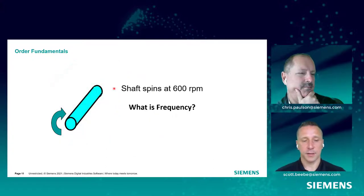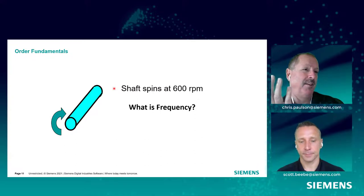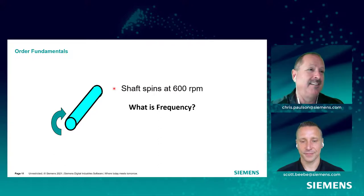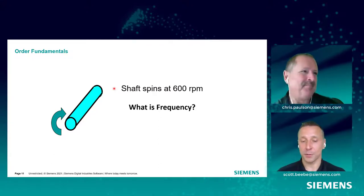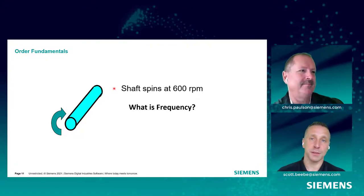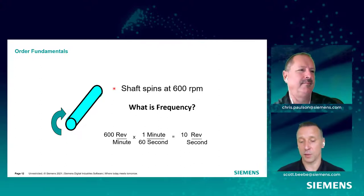If we look at just that shaft and spin it at 600 RPM, what's the frequency there, Chris? Any guesses? We have rotations per minute and want to get to frequency — cycles per second. Doing the quick math, we can get to 10 revolutions per second. So at 600 RPM, the frequency of this shaft is 10 hertz. We can plot that amplitude on a frequency-versus-amplitude plot.